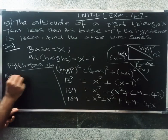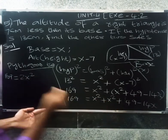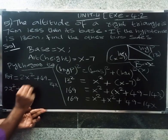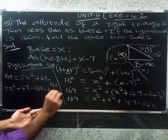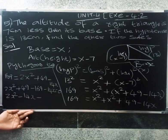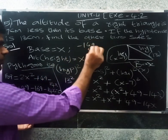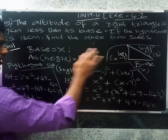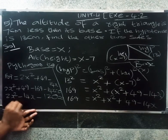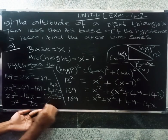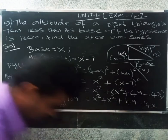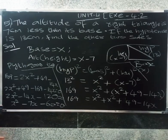So 169 equals 2x squared plus 49 minus 14x. Rearranging: 2x squared minus 14x plus 49 minus 169 equals 0. So 2x squared minus 14x minus 120 equals 0, which simplifies to x squared minus 7x minus 60 equals 0.